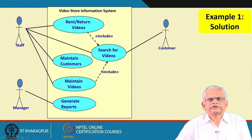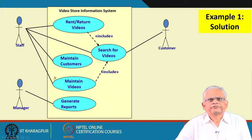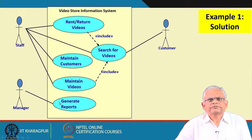Let us represent this in the form of a use case diagram. We have rent and return videos performed by staff, and that use case includes the search for videos. The search for videos can also be invoked by the customer and the staff. The staff can maintain customers and videos, which involves searching the video database, and the manager can generate reports. This captures all the functionality defined in the text description.